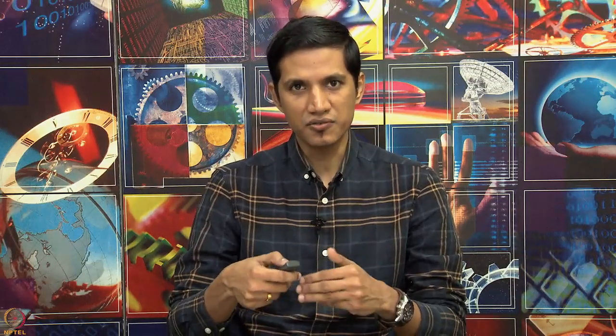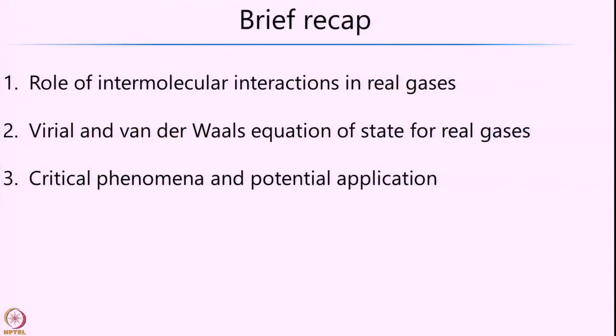In the Van der Waals equation of state, we tried to construct the equation using phenomenological or intuitive arguments based on the interaction between molecules. We also looked at some of the advantages and limitations of the Van der Waals equation of state. Finally, we saw what are called critical phenomena or critical points which are associated with it, and some of the potential applications — for example, selective and benign extraction of chemicals from a mixture by varying temperature and pressure. We took the example of supercritical carbon dioxide to illustrate this.